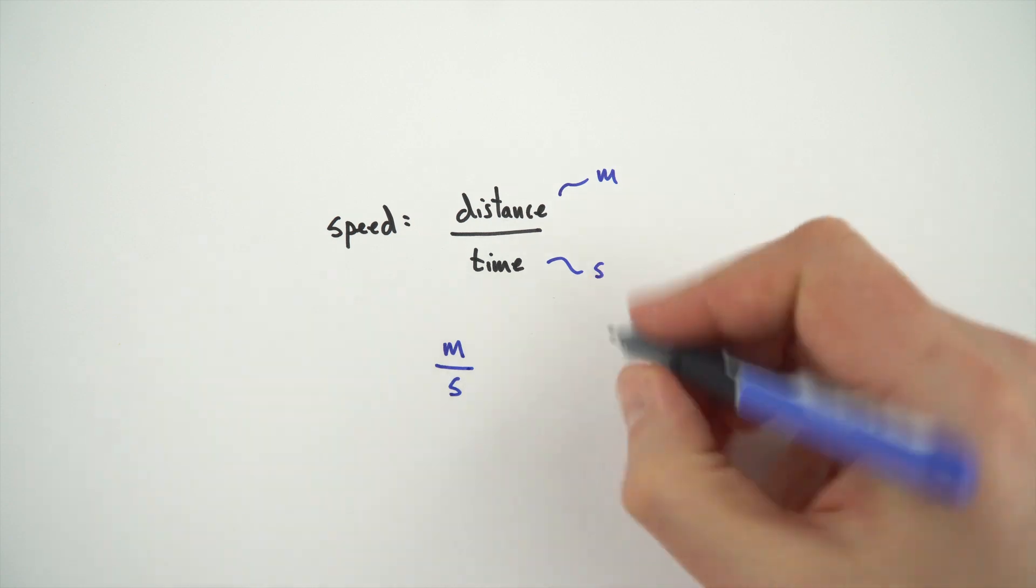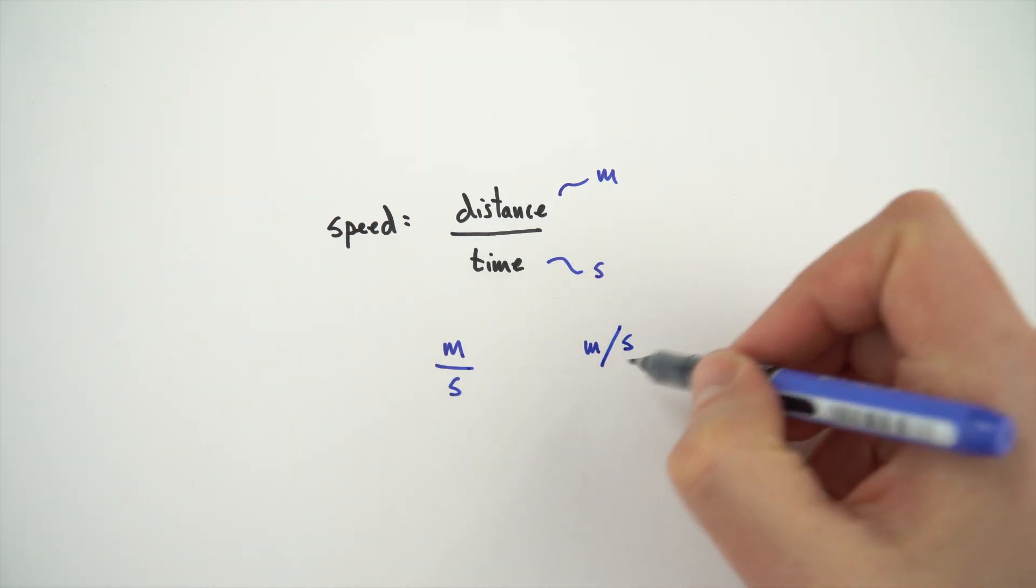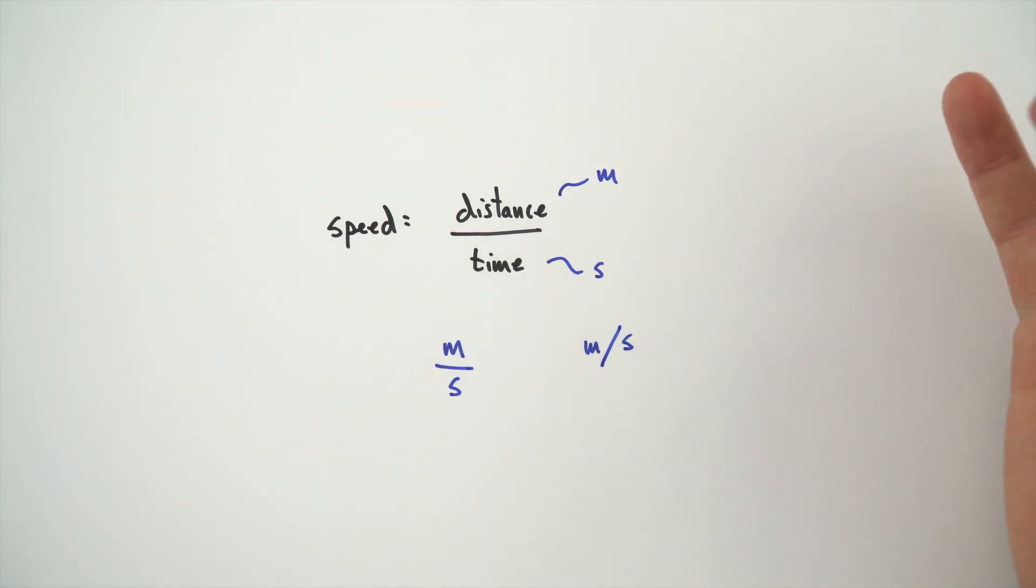Now we don't write it as m over s. What we do instead is we write it as m slash s. Okay, so this then stands for meters per second.